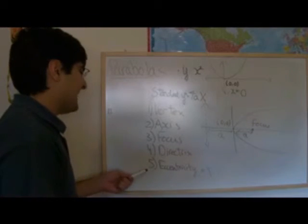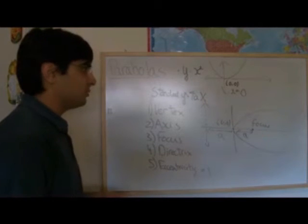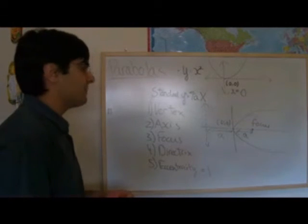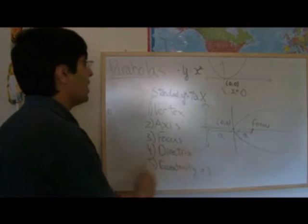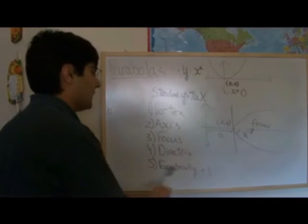The fifth feature is eccentricity, which will become a bit clearer when we do ellipses and hyperbolas. But for the time being, remember that eccentricity in the case of a parabola is one.